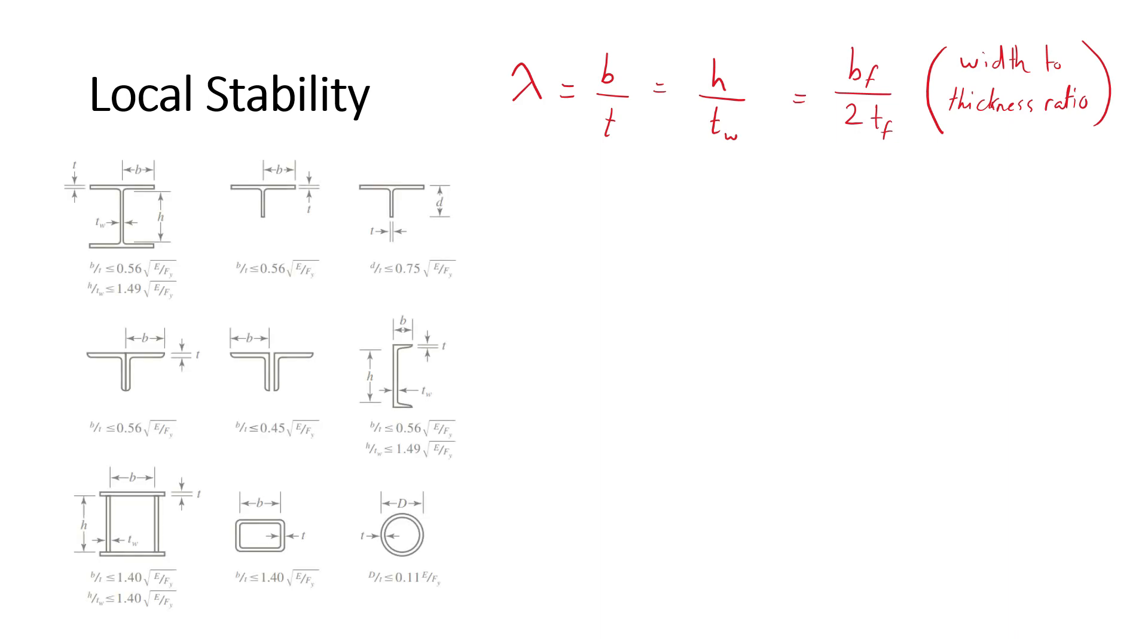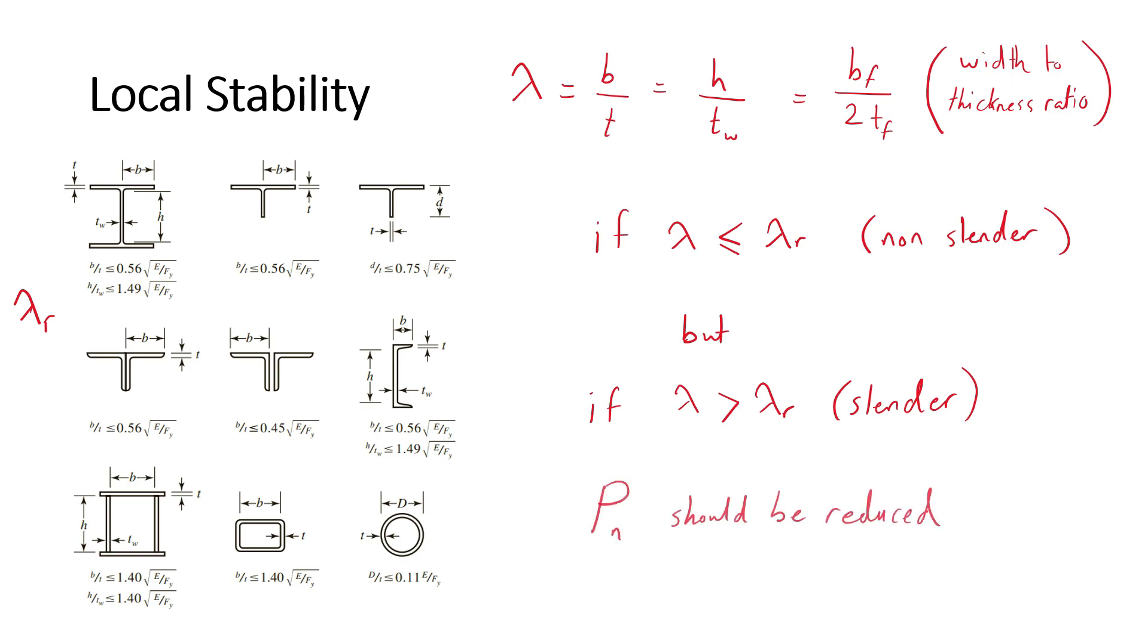The following is a figure that shows width to thickness ratios of the elements of some of the most commonly used structural steel sections and the respective limiting width to thickness ratios, lambda r. If lambda is less than or equal to lambda r, then the element is non-slender. However, if lambda is greater than lambda r, then the element is slender and the allowable compressive force P sub n should be reduced.